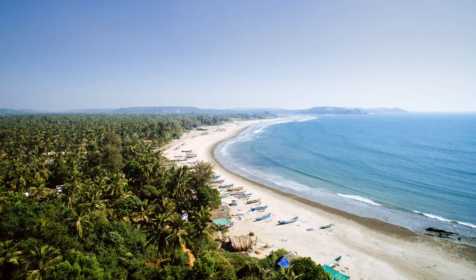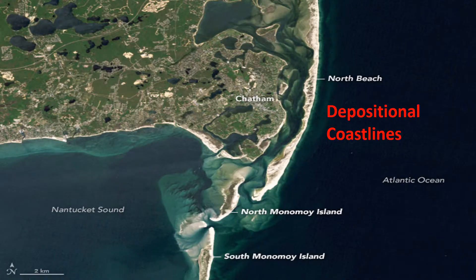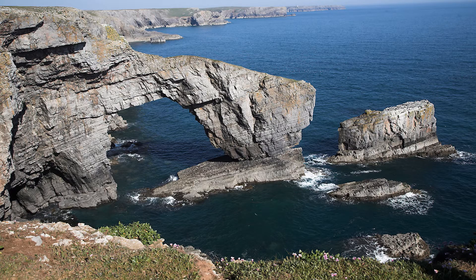There are two different types of coastlines: erosional coastlines and depositional coastlines. Let's focus on one at a time. First, let's look at erosional coastlines. Erosional coastlines are exposed cliffs that go through both physical and chemical weathering. Most of the erosion is caused by physical weathering instigated by waves crashing against the sides of the cliffs.